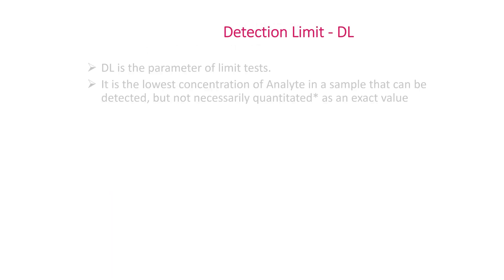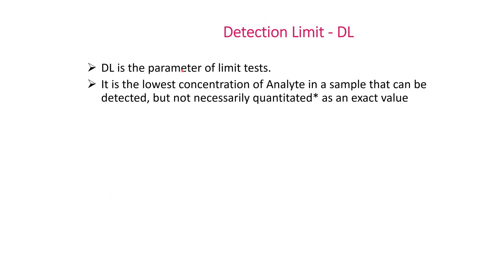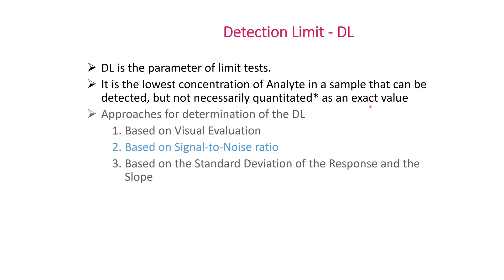Detection Limit (DL) is the parameter of a limit test. It tells about the limitation of the method and susceptibility of the instrument. It is the lowest concentration of analyte in a sample that can be detected, but not necessarily quantitated as an exact value.